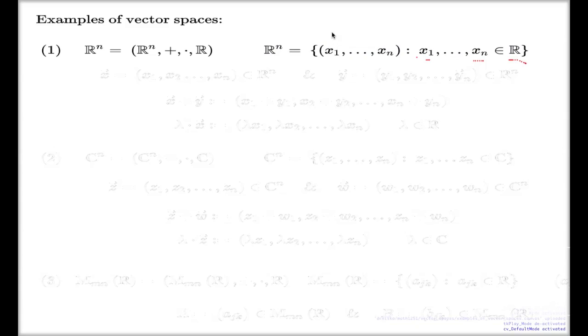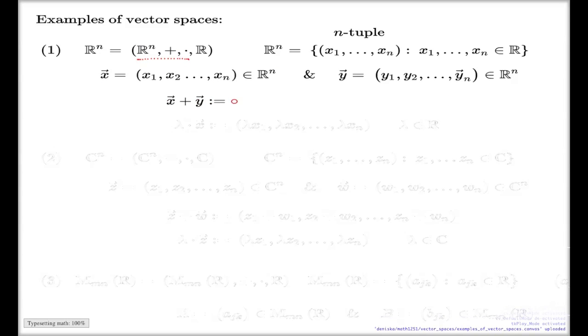This is called an n-tuple. Now, operations are defined like this: if you have two n-tuples, one of them is x (I use vector notation), and another n-tuple which I call y, the operation plus for this quadruple is defined as the sum of two vectors. It's the per-component addition: x₁ plus y₁, x₂ plus y₂, and so on for every component, all the way until the nth component.